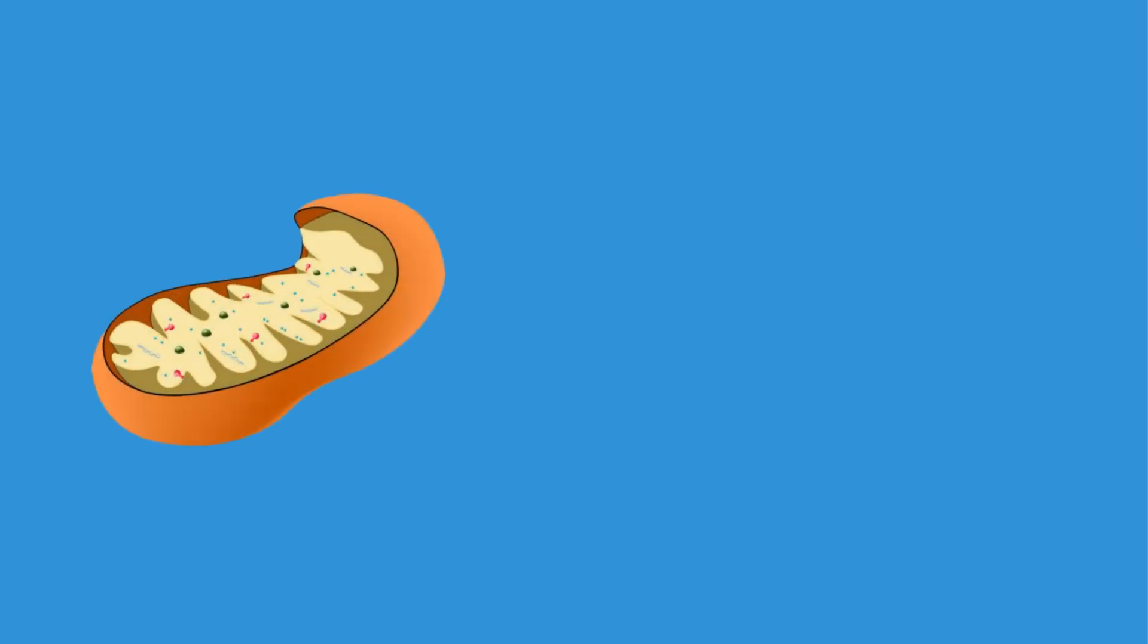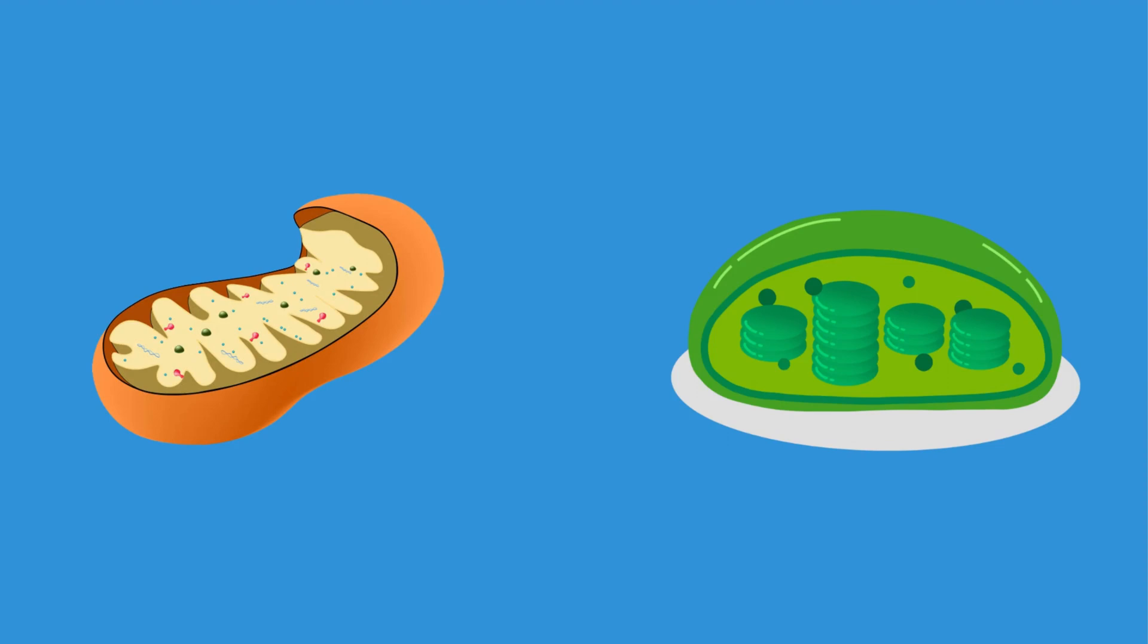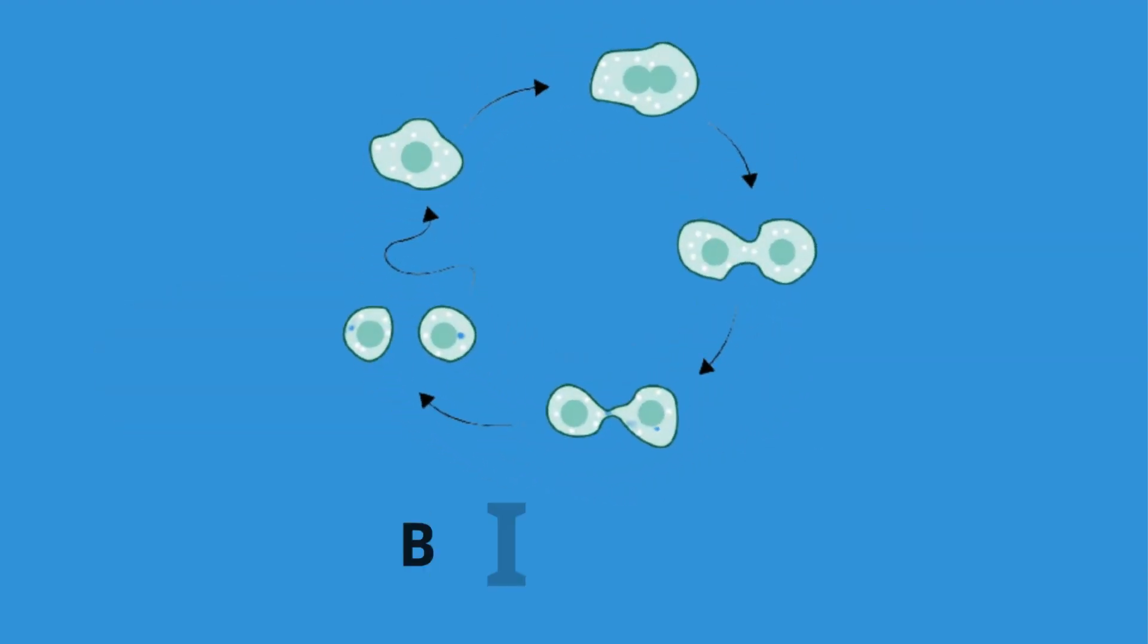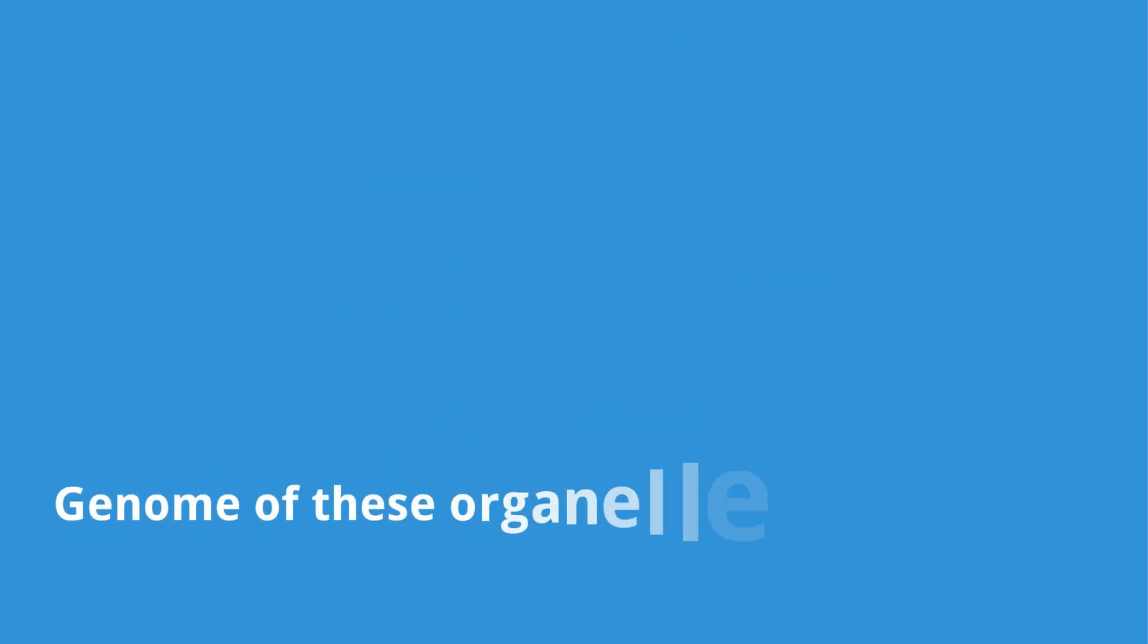First, mitochondria and chloroplasts replicate on their own through something similar to binary fission, and cells cannot create new ones. The genome of these organelles is also remarkably similar to those of prokaryotes.